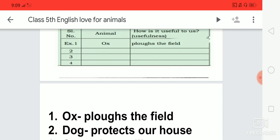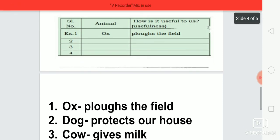After that, what we can write? Write down cow. How is it useful to us? Write down in the last column gives milk, G-I-V-E-S gives, milk, M-I-L-K milk.